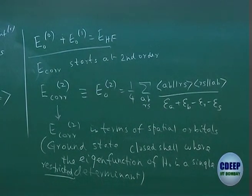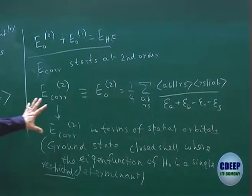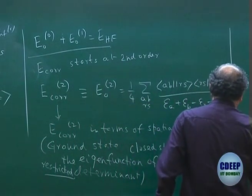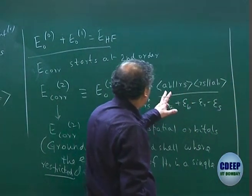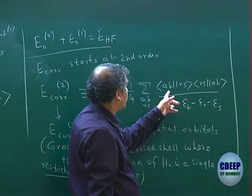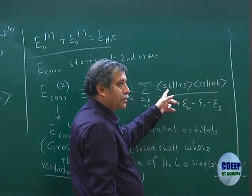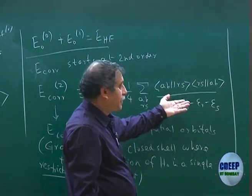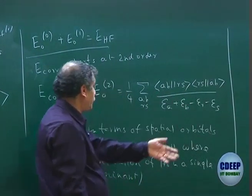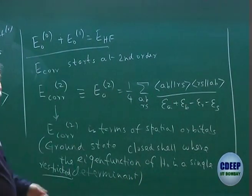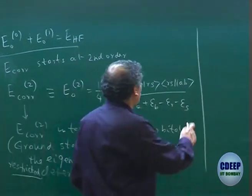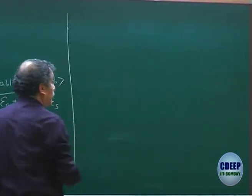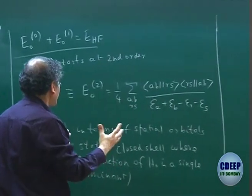This particular derivation follows the restricted Hartree-Fock determinant. You essentially get this as the first correction to the Hartree-Fock energy, requiring two-electron integrals between two sets of occupied orbitals and two sets of virtual orbitals. At this point these are spin orbitals, but we will discuss what happens when you integrate and get the spatial orbitals.